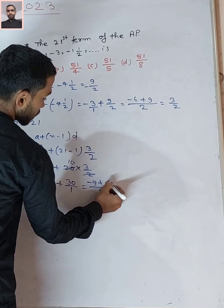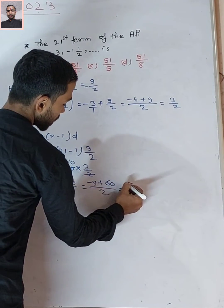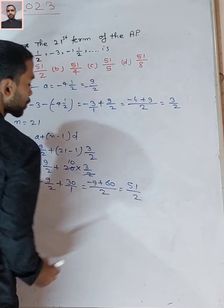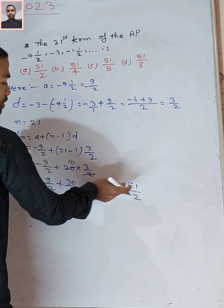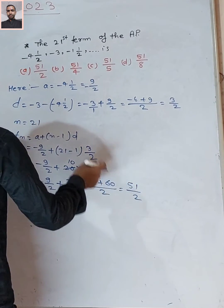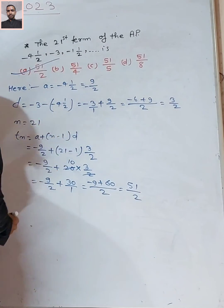So, 60 minus 9 equals 51 over 2. Therefore, the answer is 51/2, and option A is correct.